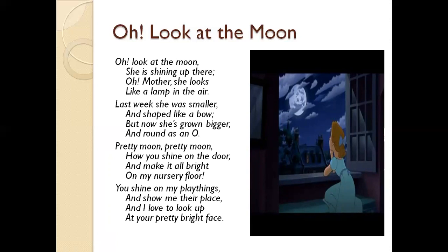Now the girl is saying 'Pretty moon, pretty moon, how do you shine on the door?' She is calling the moon pretty and asking how it shines on her door. She is sitting near a door or window pane and asking, 'How do you shine on my door and make it all bright on my nursery floor?' A nursery is a room for young children where their playthings and other things are kept.